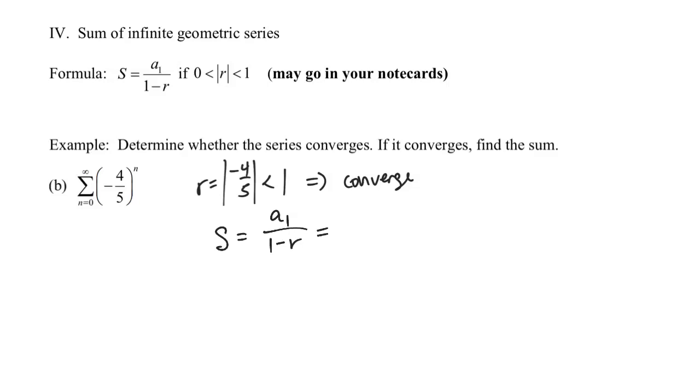A sub 1 is the first term, which is going to be found by plugging n equals 0 into this formula, and so that will be negative 4 fifths raised to the 0, and anything to the 0 power is 1. And then the denominator will say 1 minus negative 4 fifths, so I'll go ahead and write that as 1 plus 4 fifths, and typing that into the calculator, what you're going to end up with is 5 ninths.